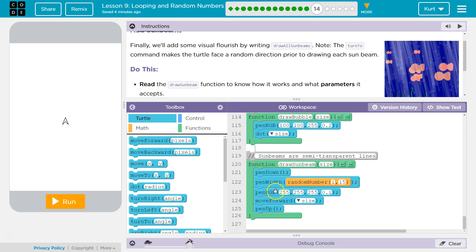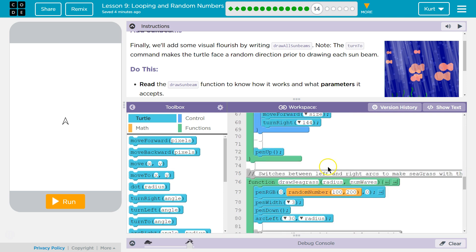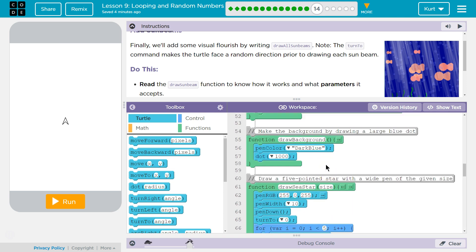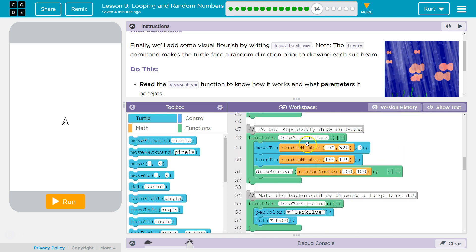So now draw sunbeam size is that random number that we had in the function call. So 117, we'll pretend. Drops in, pin down, pin width. Some random number between 1 and 15. The pin color is going to be white with almost completely transparent. We're going to move forward. So this is going to be the size. So size is going to be the length. And the length, again, is that random number when we called the function and draw all sunbeam.